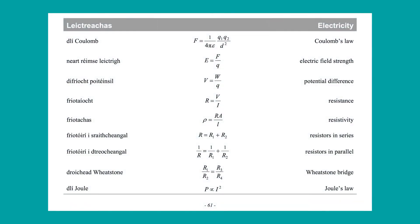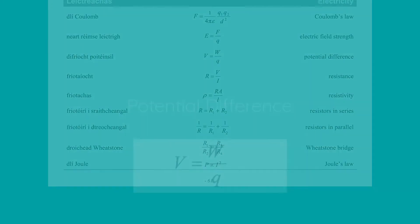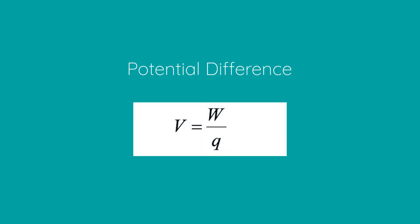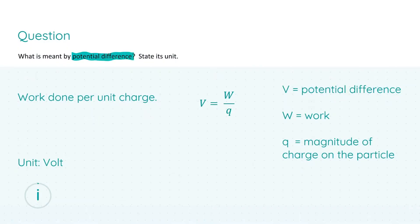Before I start answering part 1, I'd like to draw your attention to page 61 of the formula and tables book when we are looking at potential difference in particular. In part 1 we're asked what is meant by potential difference and we're asked to state its unit. The answer is as follows: you can either provide the mathematical or the verbal notation. I'm going to give you the verbal notation first, and it's just simply work done, which will get you three marks, per unit charge, which will give you the next three marks.